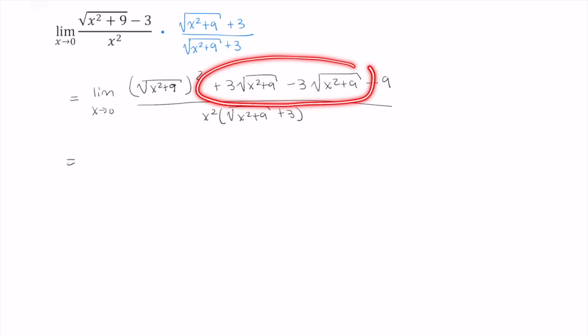These middle terms vanish since we have 3 times the square root of x squared plus 9 minus 3 times the square root of x squared plus 9. And in our numerator, we're just left with the limit as x approaches 0 of x squared plus 9 minus 9 divided by x squared times the square root of x squared plus 9 plus 3.